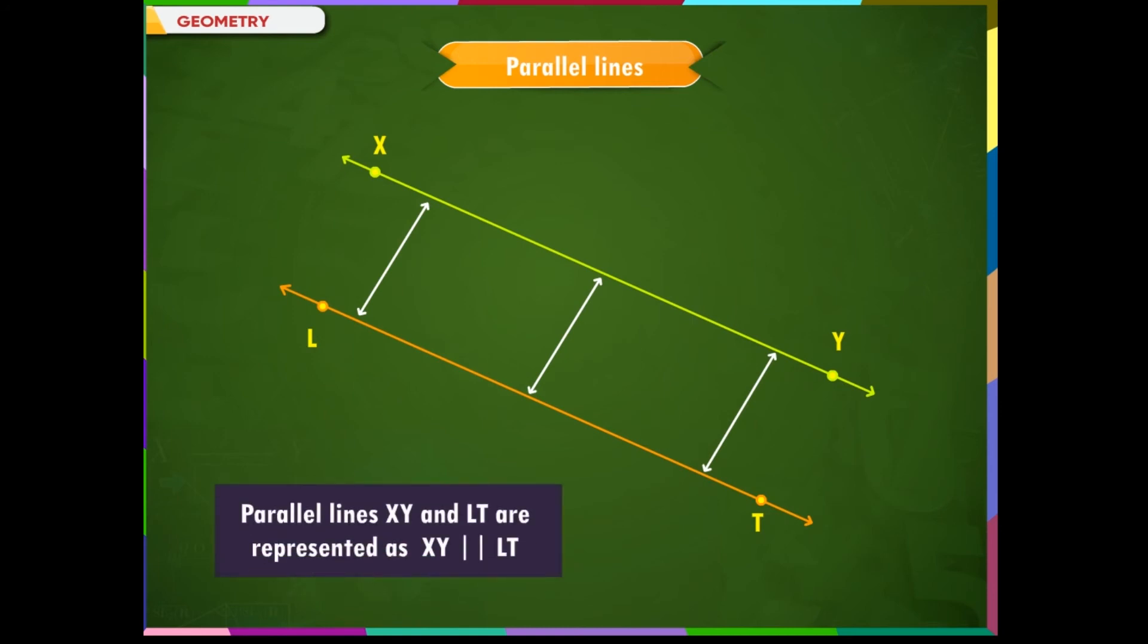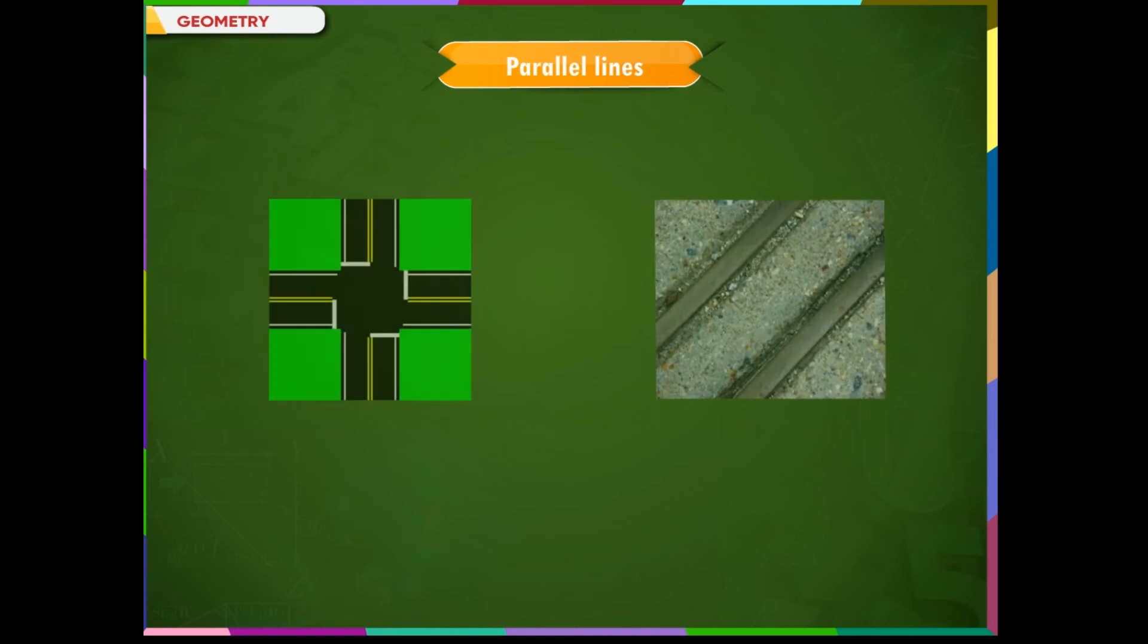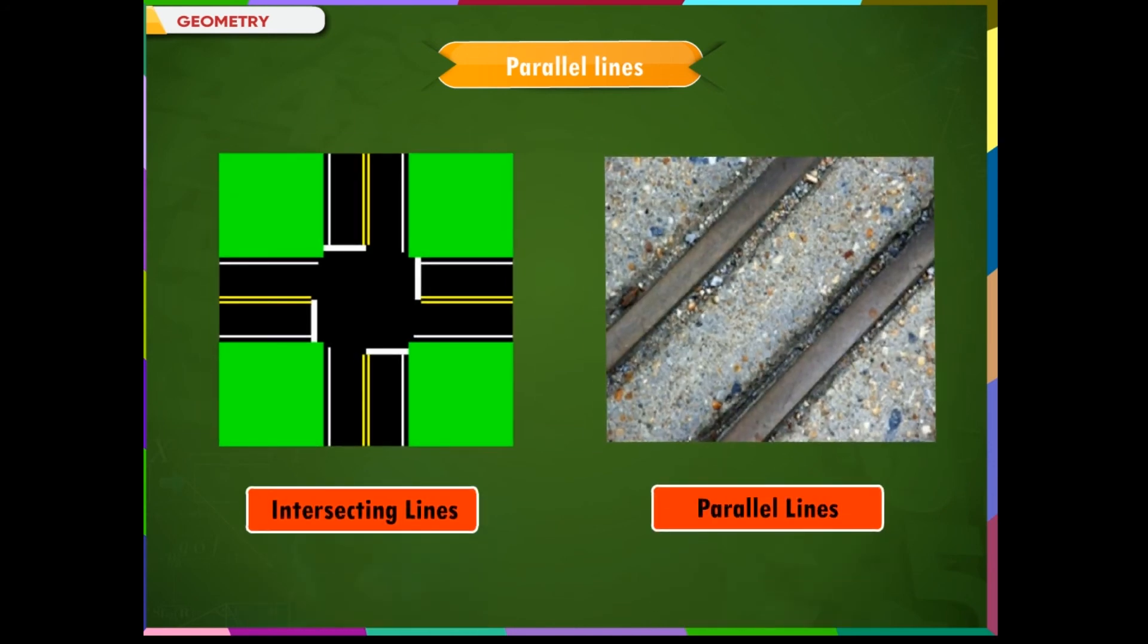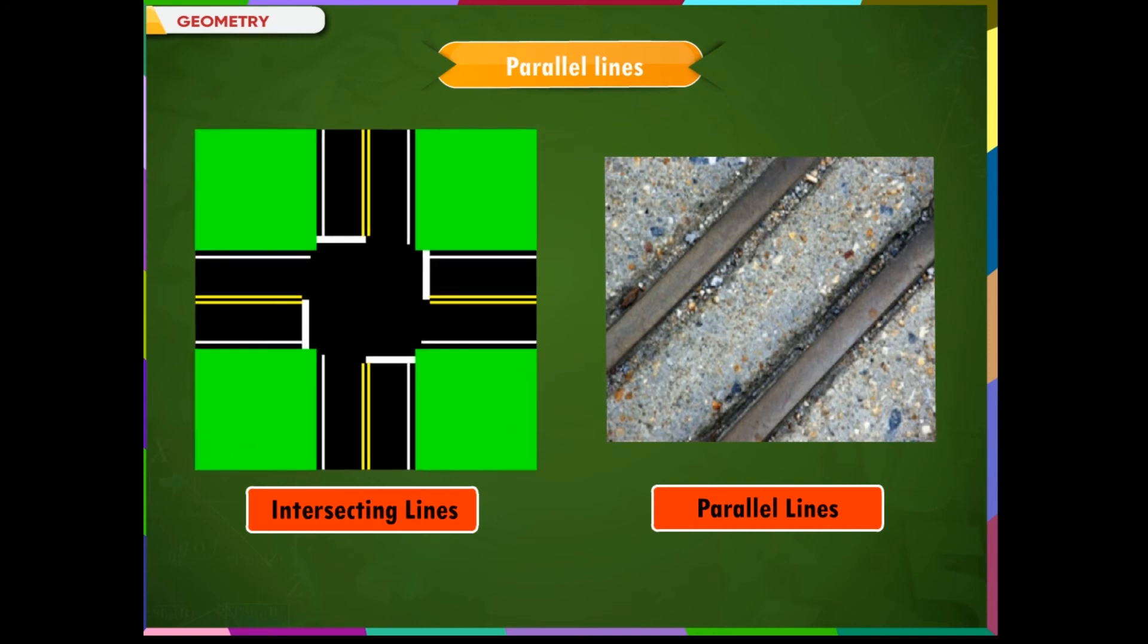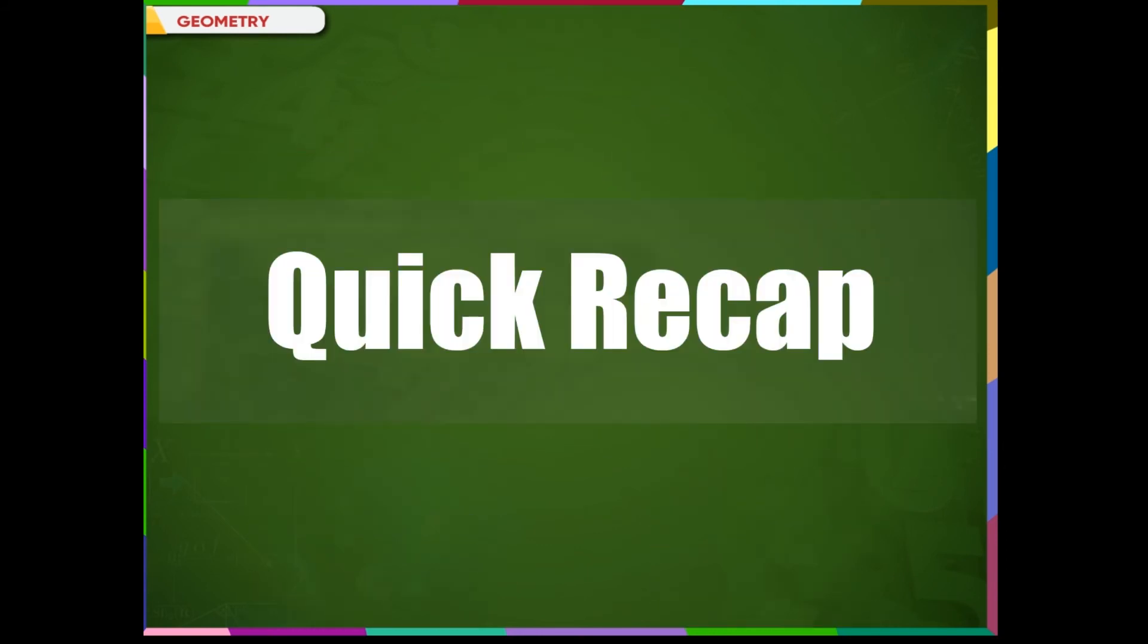We can see intersecting lines and parallel lines in our everyday life. For example, intersecting roads and railway tracks respectively.